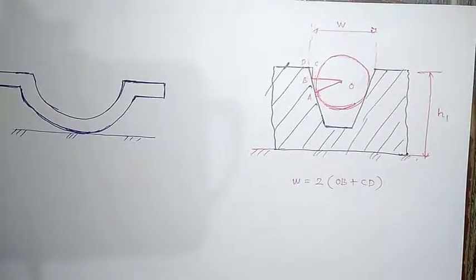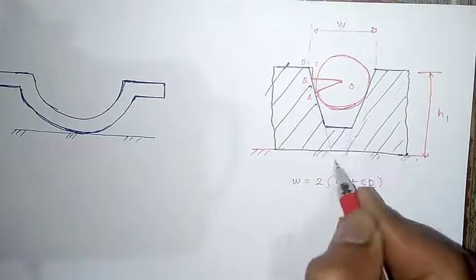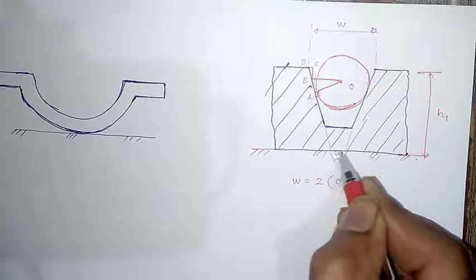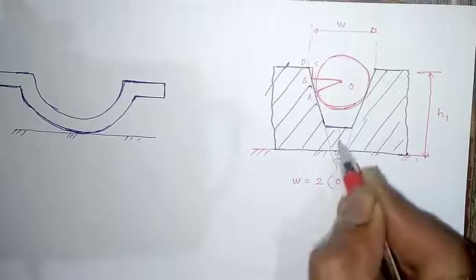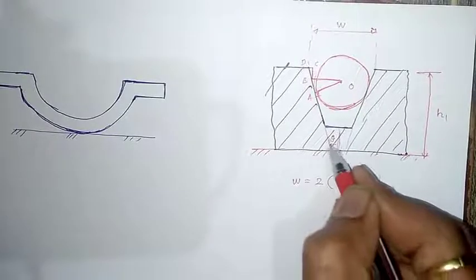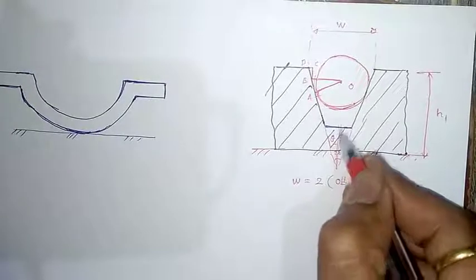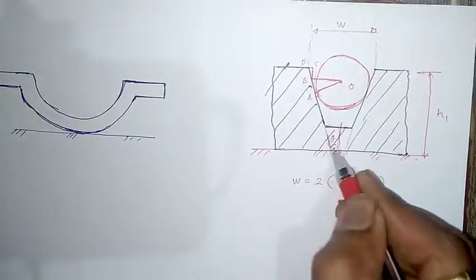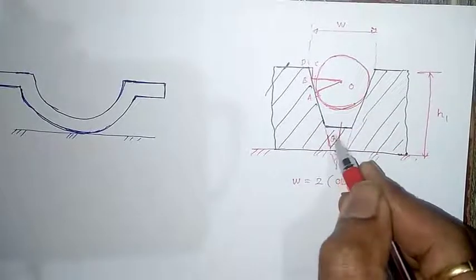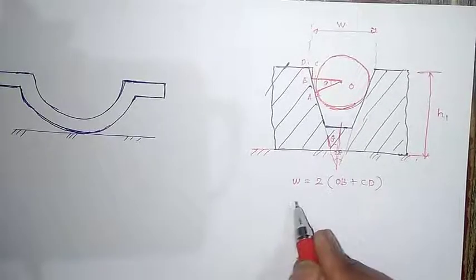Our intention here is to find OB and CD. Before that, we should know the angle of this slot. This slot has some angle 2θ, and if I draw a normal to it, this angle will be equal to θ. The angle between these two lines and the angle between the perpendiculars to these two lines is the same. So the angle between the perpendicular lines is also θ, which is known or calculated by other simple instruments shown in another video.